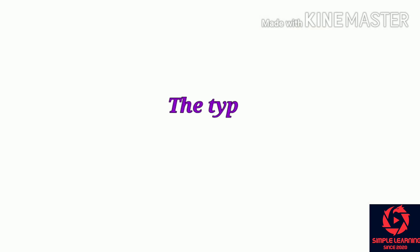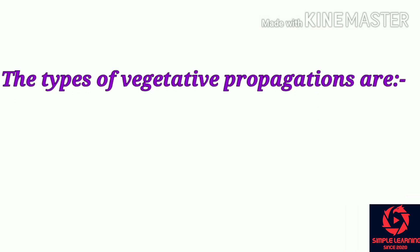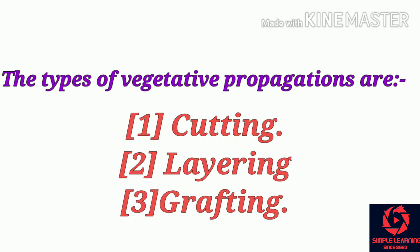Friends, the types of vegetative propagations are cutting, layering, and grafting. First, cutting.